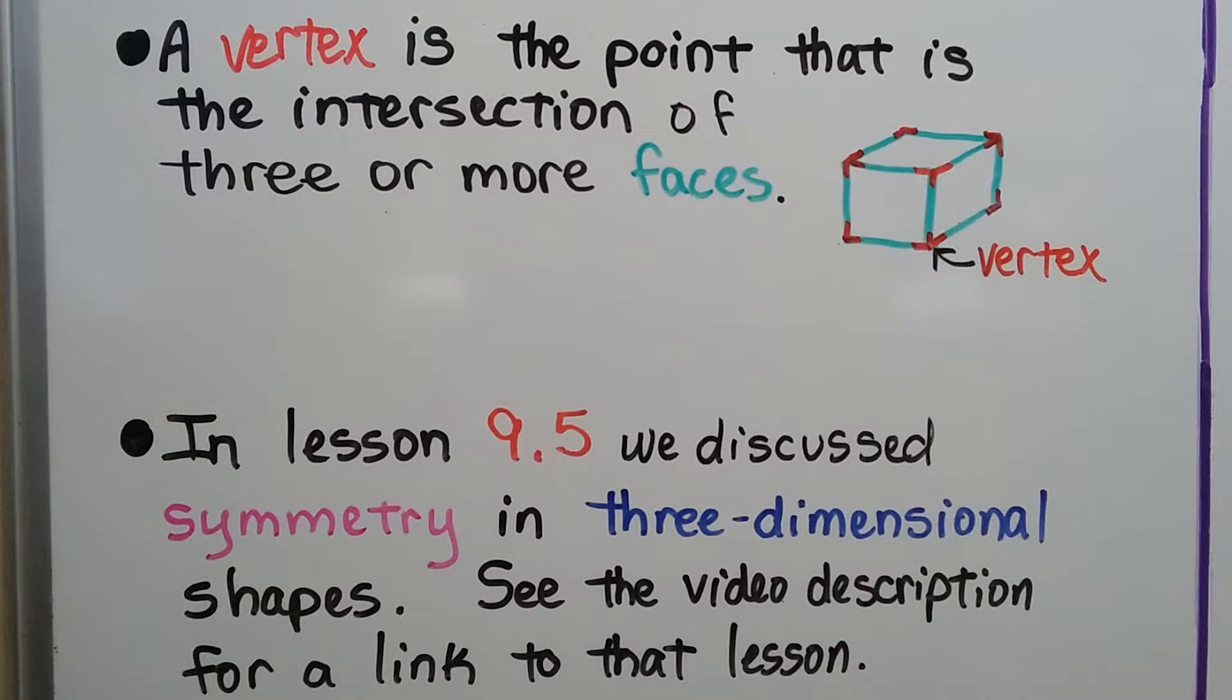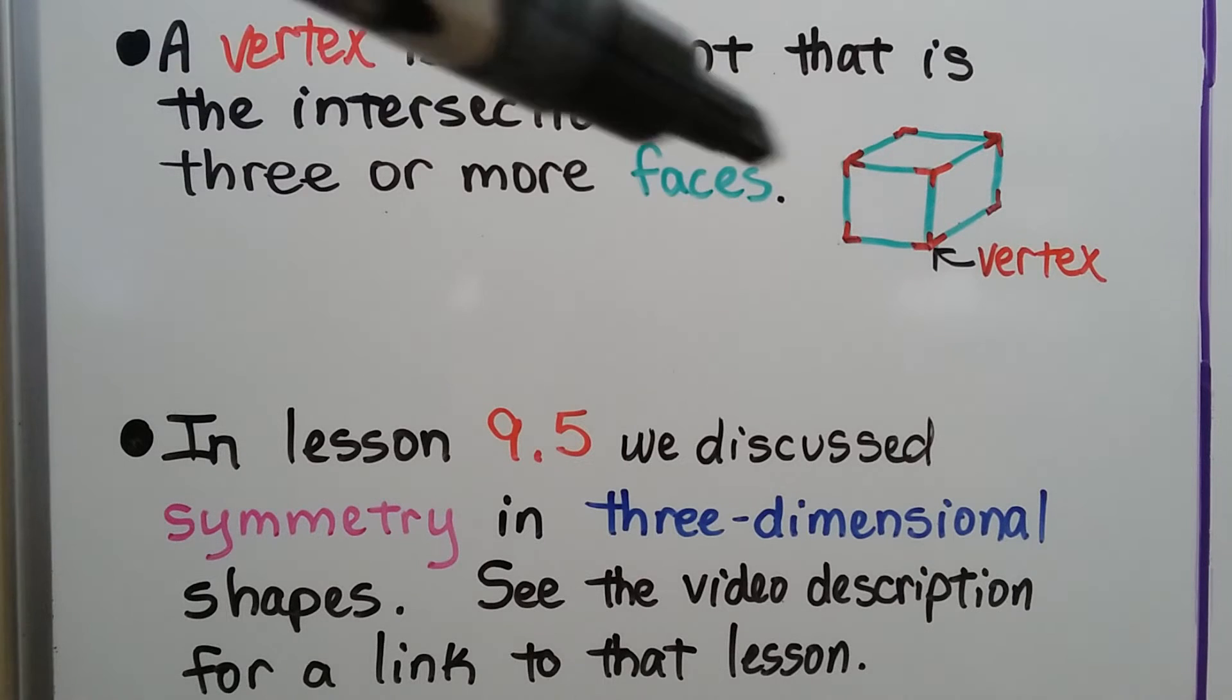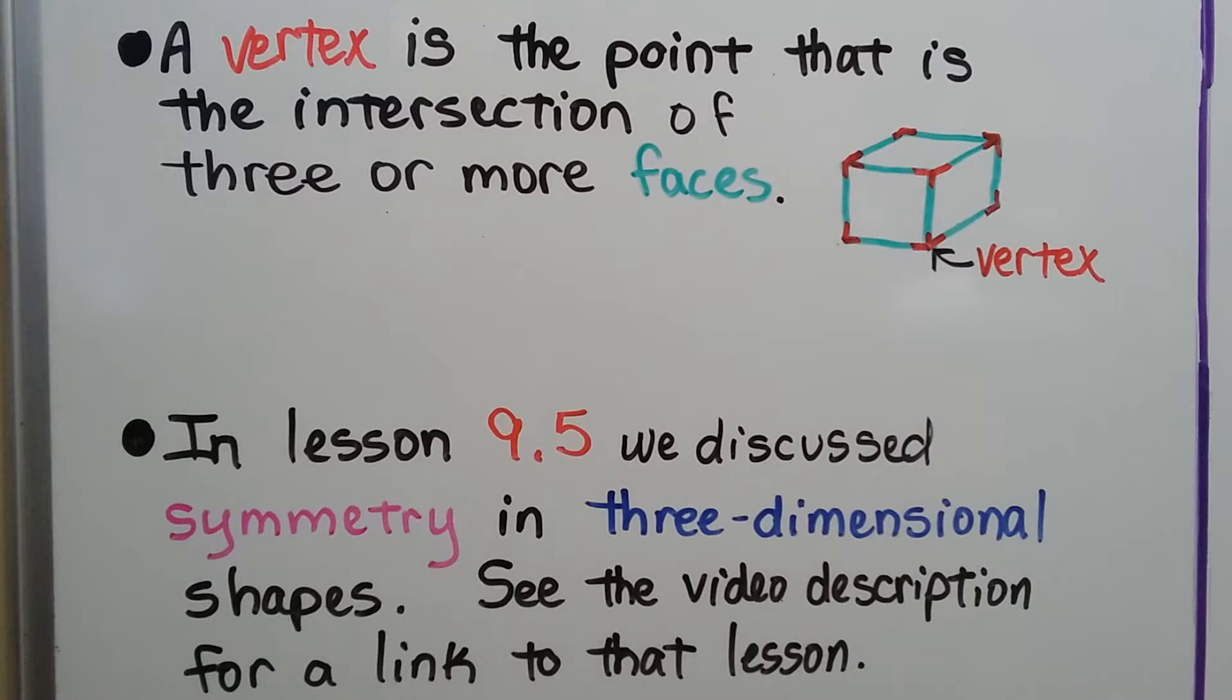A vertex is the point that is the intersection of three or more faces. So you can see these corners here, that's the intersection of three or more faces. Back in lesson 9.5, we discussed symmetry in three-dimensional shapes, and I'll have a link to that in the video's description if you need to see it.